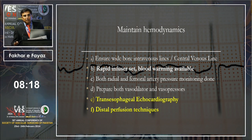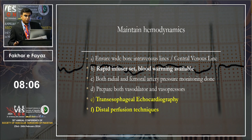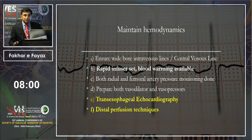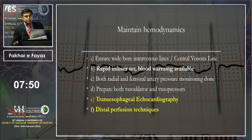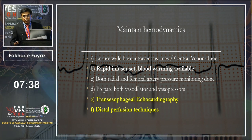Transesophageal echocardiography is a very important tool during aortic surgery. It detects ischemia even before ECG does, guides fluid resuscitation, assesses ventricular contractility and preload, and assists the surgeon while passing cannulas for bypass — confirming correct cannula positioning, particularly for femoro-femoral bypass and IVC cannula placement.